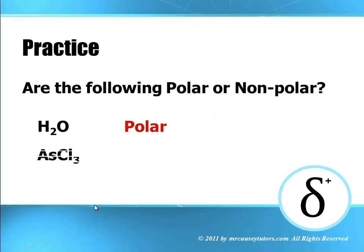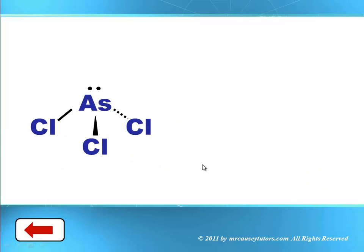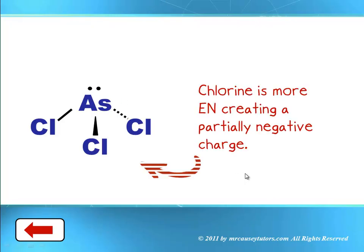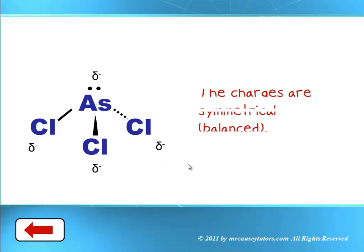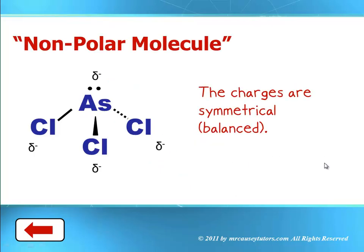Let's practice another one: arsenic trichloride. Nonpolar. You can see arsenic is bonded three times with chlorine and has a lone pair. Chlorine is more electronegative, creating a partially negative charge, and arsenic has lone pairs of electrons creating a partial negative charge. The charges are symmetrical and balanced, and this creates a nonpolar molecule.